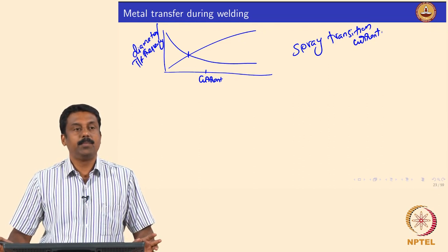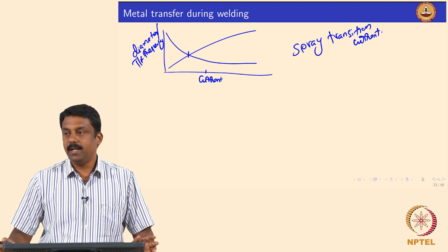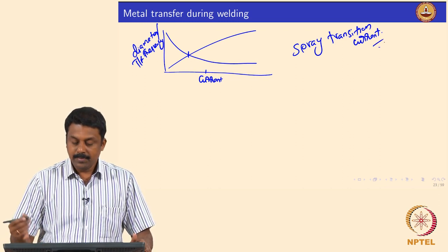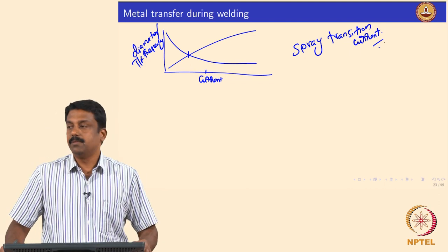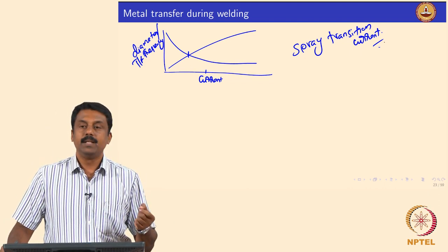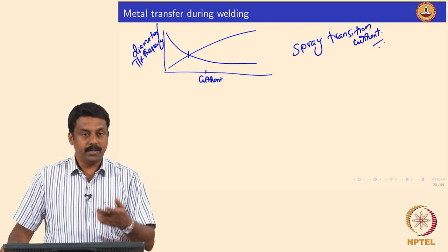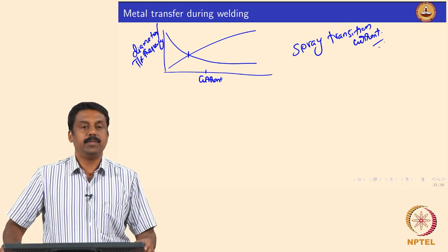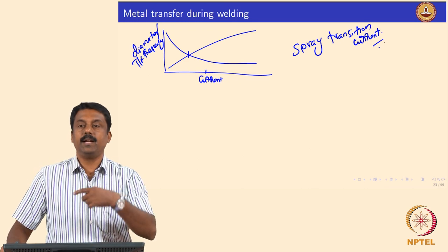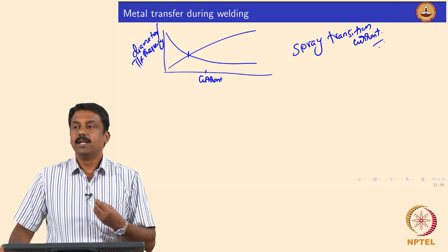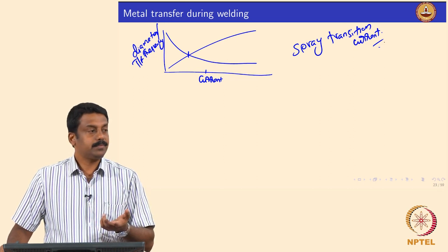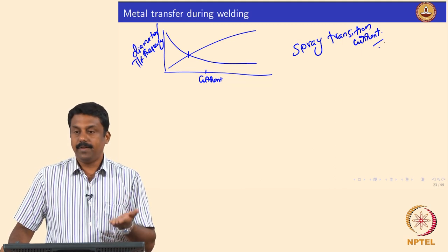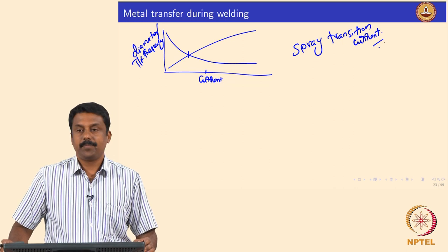For the most stable operations, GMAW welding is generally carried out in and around the spray transition current. This is the important operating window. When designing a welding procedure specification (WPS), one of the key factors we consider is the spray transition and what current for a given wire diameter the spray transition is observed. We then play around with other parameters such as shielding gas, arc length, and wire feed rate to control heat input.